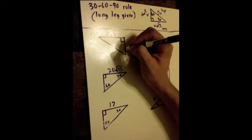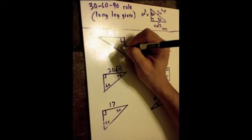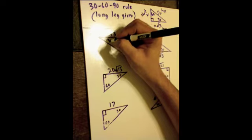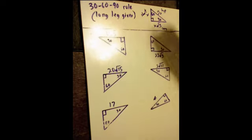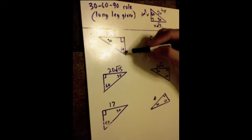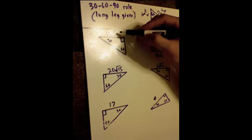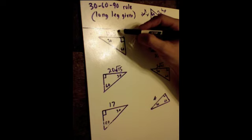Let me put the measurements in here. This is my 60-degree angle and this is my 30-degree angle. Since this is 60, then this side opposite it is my long side.